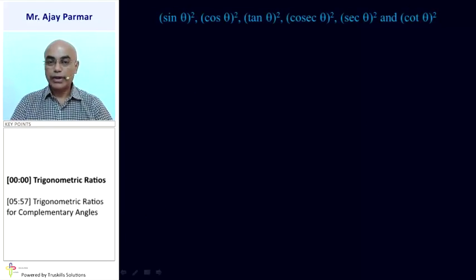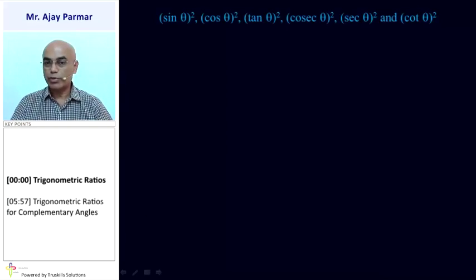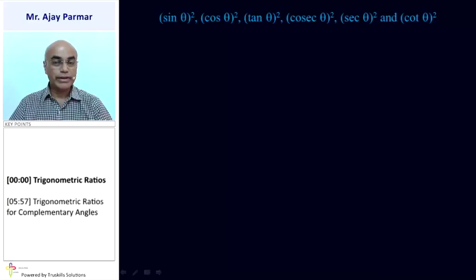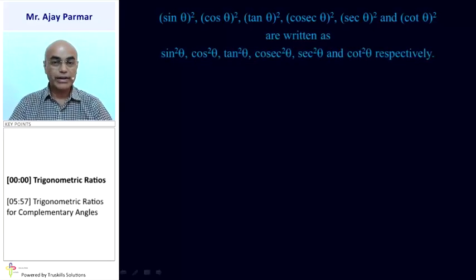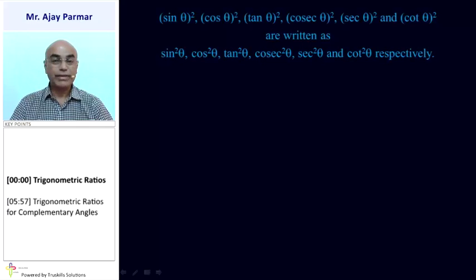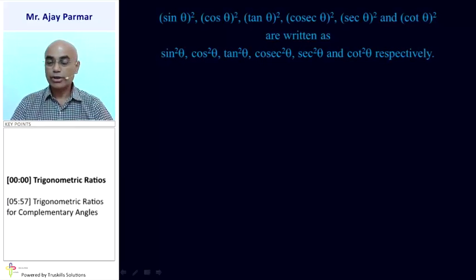Also, sin theta whole square, or cos theta whole square, tan theta whole square — any square of any of the trigonometric ratios — is applicable only to the trigonometric ratio and not to the angle. So it can be written as sin squared theta, cos squared theta, tan squared theta, and so on. The square is not applicable to the angle along with sin or other trigonometric ratios.